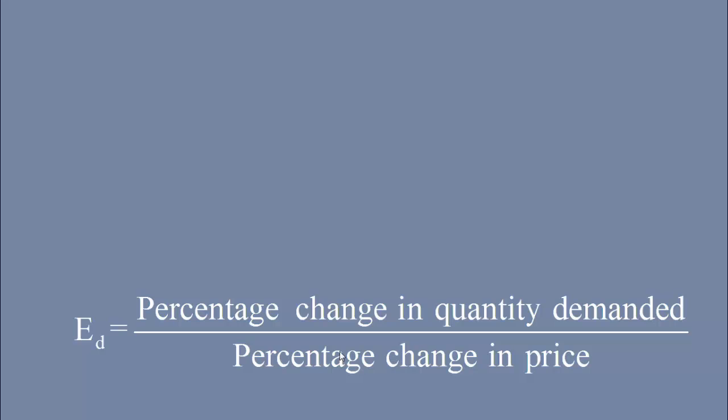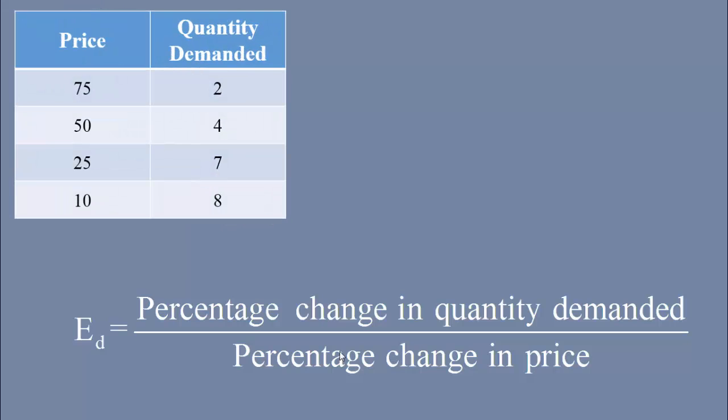We shall use a demand schedule to understand this. This is the demand schedule. The price falls from 50 rupees to 25 rupees, while quantity demanded goes up from 4 units to 7 units.